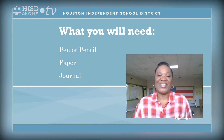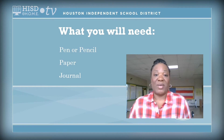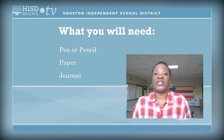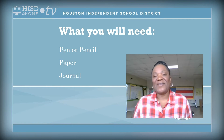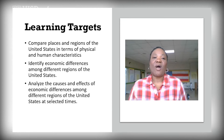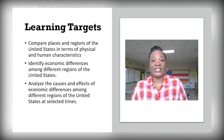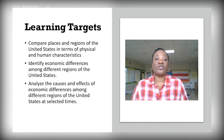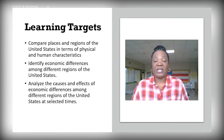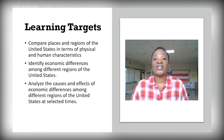Before we get started, there are a couple of things I want you to have. You will need a pen or pencil to take some notes, and you will need paper. If you like to write in your journal, you can certainly use that. Our learning targets today are to compare places and regions in the United States in terms of physical and human characteristics, identify economic differences among regions, and look at the cause and effect of what made things happen.